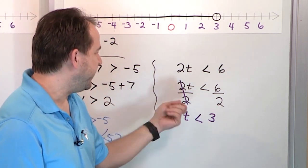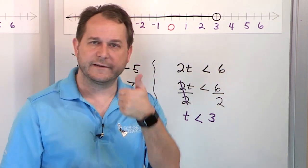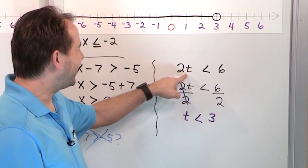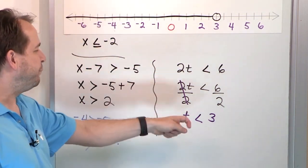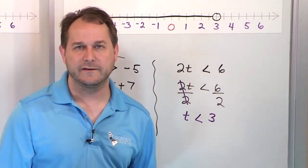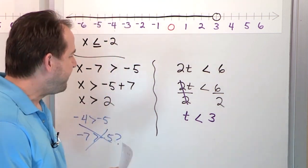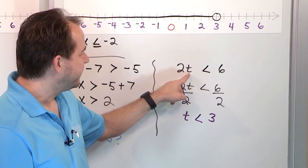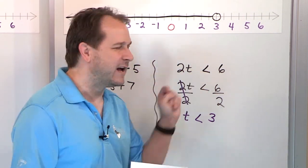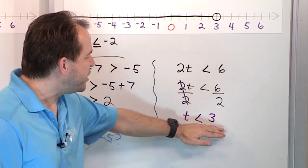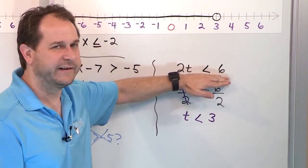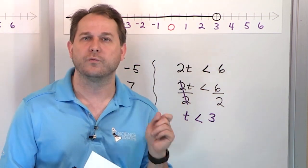Any of these numbers to the left of 3, but not including 3, would work. Let's pick 0: 2 times 0 is 0, that is less than 6. Put in negative 1: negative 1 times 2 is negative 2, that's also less than 6. But if you put 10 in — which is not less than 3 — 10 times 2 is 20, and that is not less than 6. Now the special point: 2 times 3 is 6. 6 is not less than 6 — it's equal to 6 — so 3 itself is not part of the solution. That's why we have an open circle.